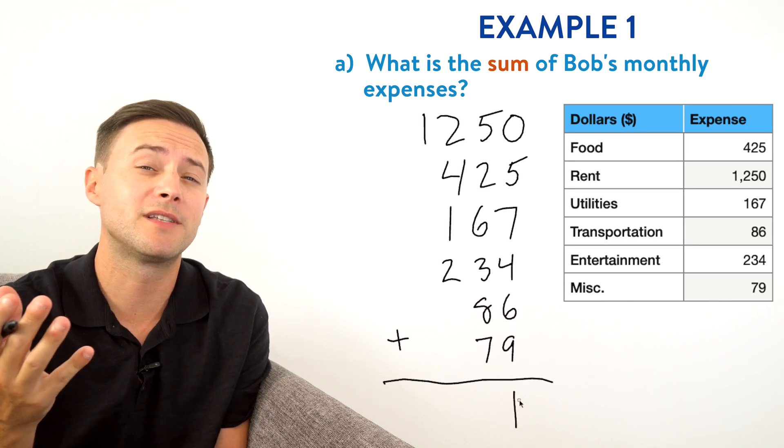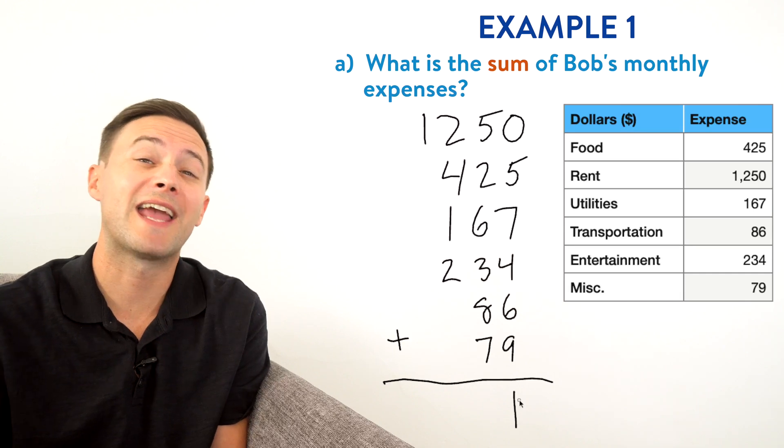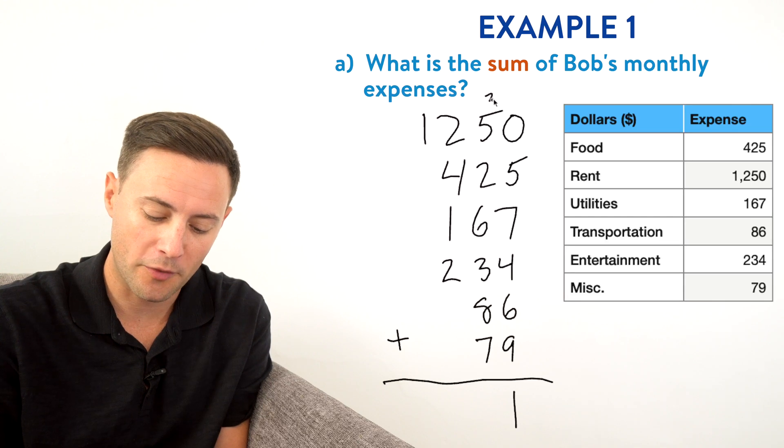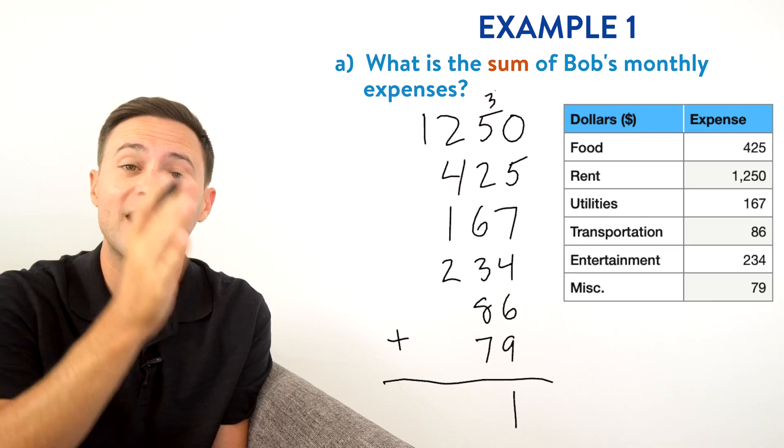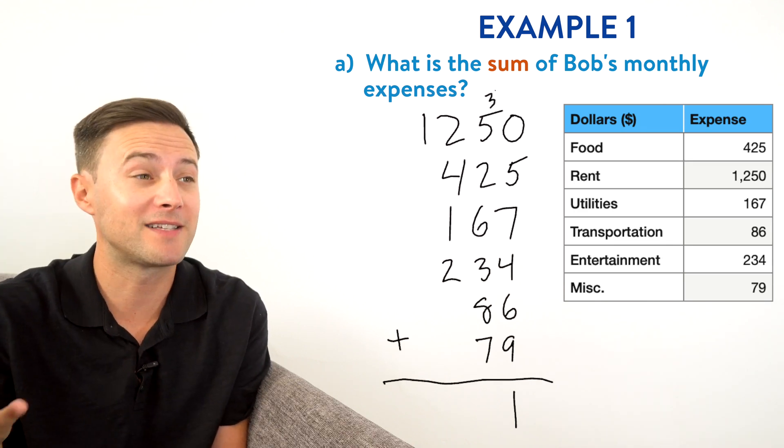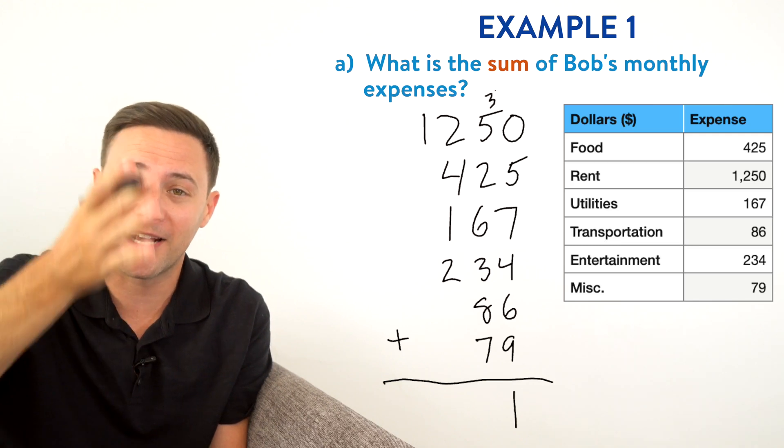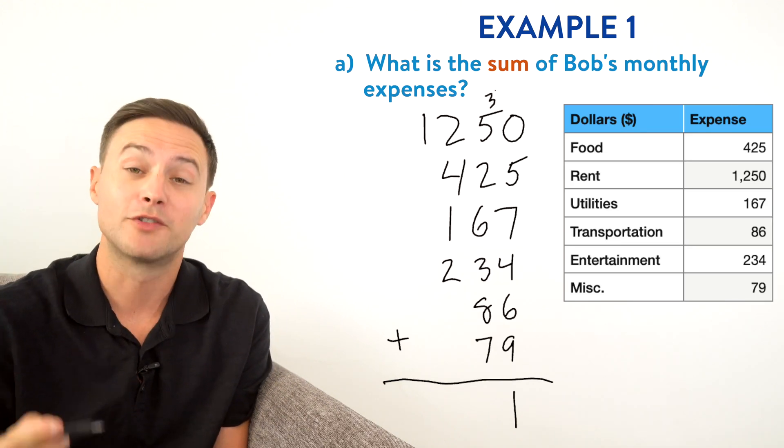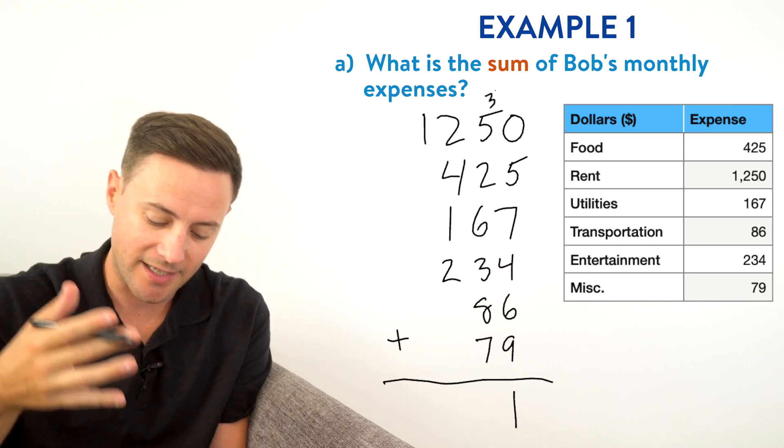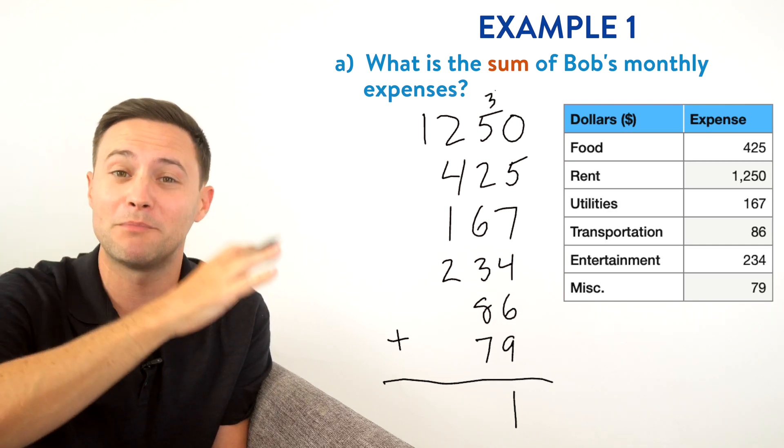So what are we going to do? We call it carrying. We're going to carry the three and we're going to write a little three just above the next column. And that column is the tens column. So that makes sense. So now we've got three more that we need to add in that next column, the tens column. So let's start there. So three plus five gives us eight plus two is 10, 16, 19, 27, 34. The exact same thing we did before. We're going to put the four down there and we're going to carry the three from that 34.